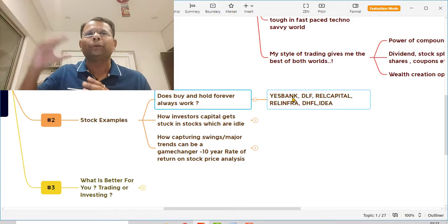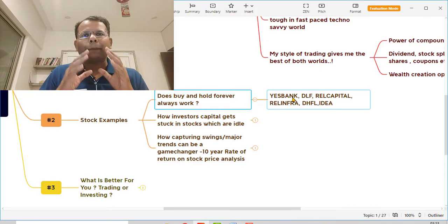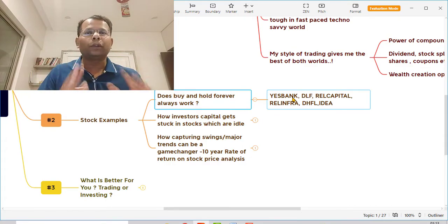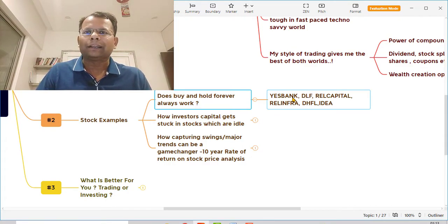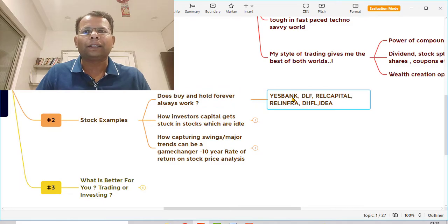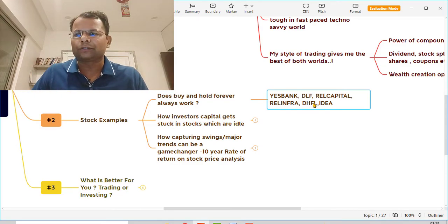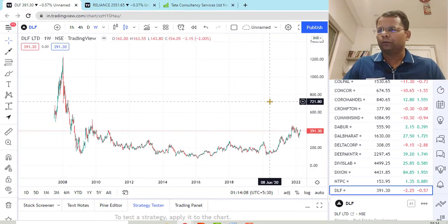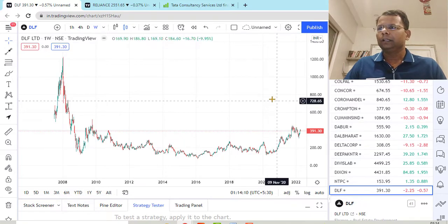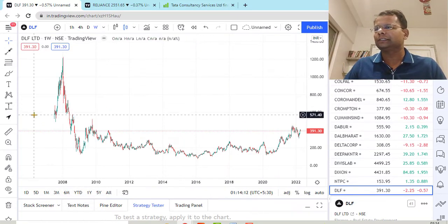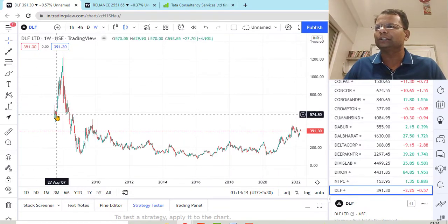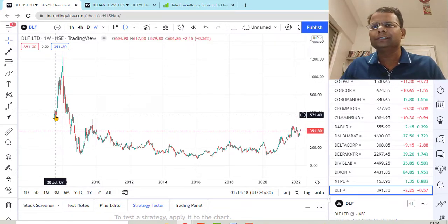These are the examples of few stocks where these were excellent stocks at one point of time, but what happened to them in the last few years we already know. Yes Bank, DLF, Reliance Capital, Reliance Infra, DHFL, Vodafone Idea. We are going to see the charts of these stocks. This is the weekly chart of DLF.